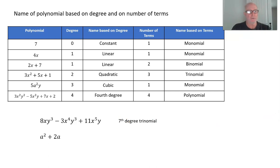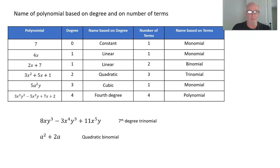a² + 2a — how would you name that? It has a degree of 2, so it's a quadratic. And there are two terms, so that's a binomial. So that's a quadratic binomial.